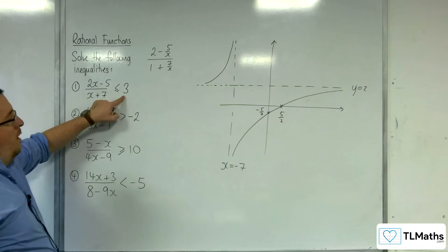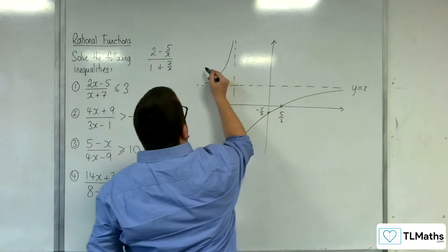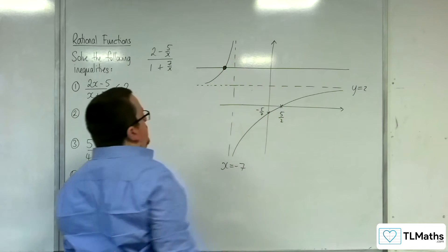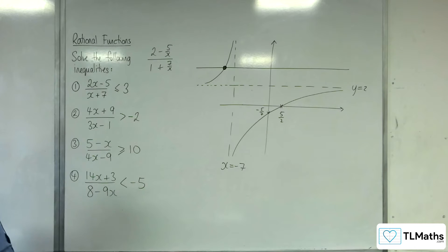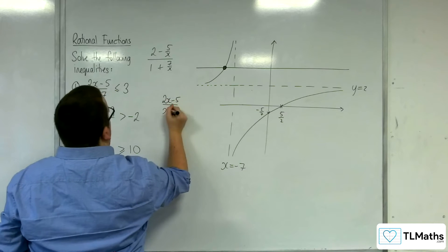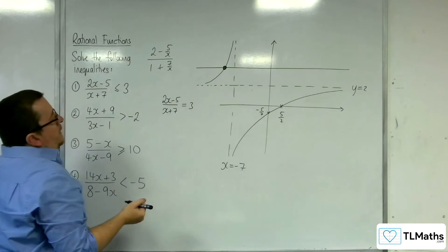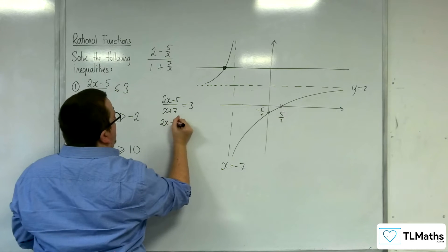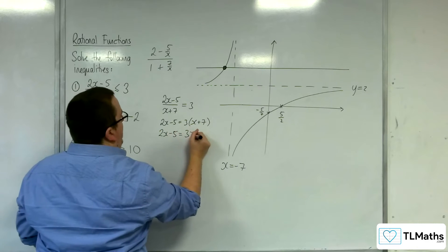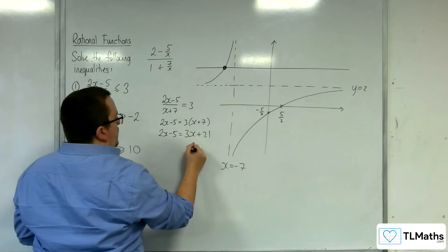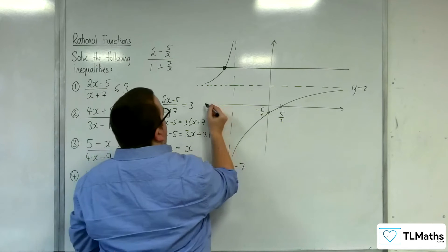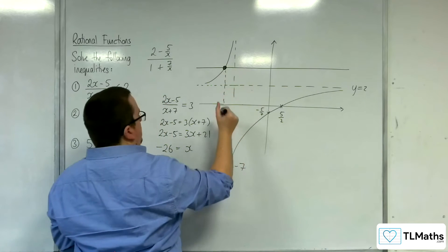Then we've got y equals 3, a horizontal line y equals 3. We see that there is one point of intersection that I'm interested in, so I need to find where that intersection point is. I need to solve the equation (2x − 5)/(x + 7) = 3. Multiplying by (x + 7): 2x − 5 = 3(x + 7), so 2x − 5 = 3x + 21. Subtract 2x from both sides, subtract 21 from both sides. So this point here is minus 26.